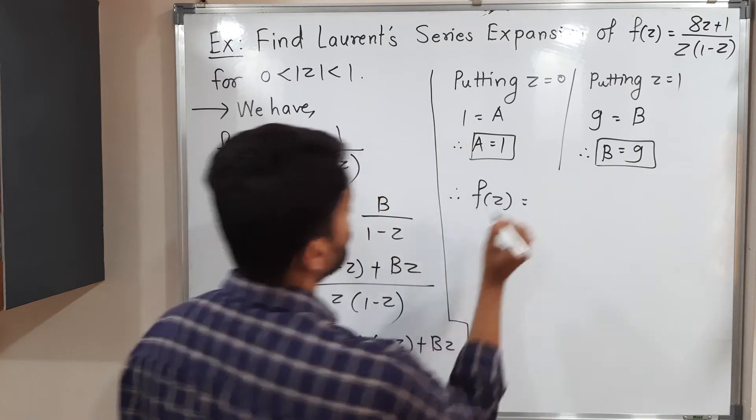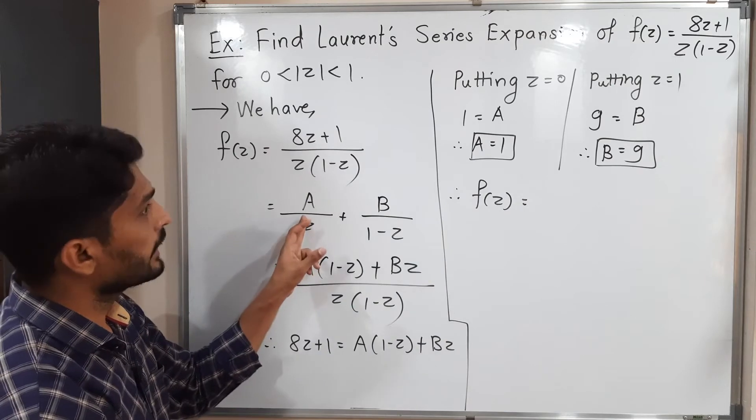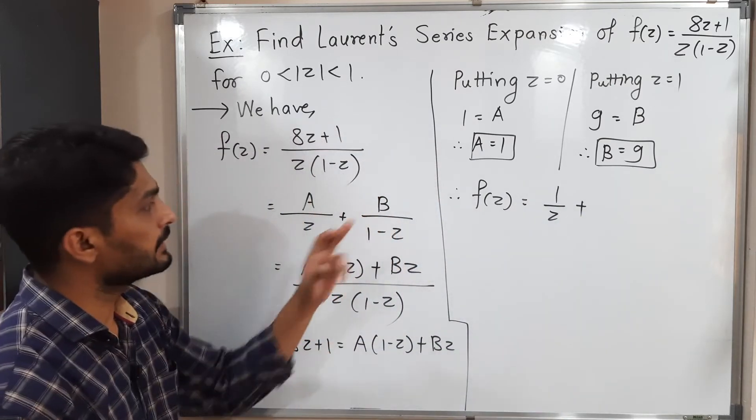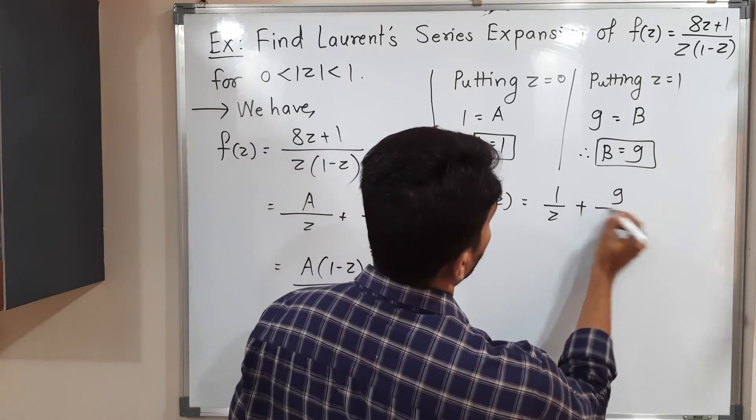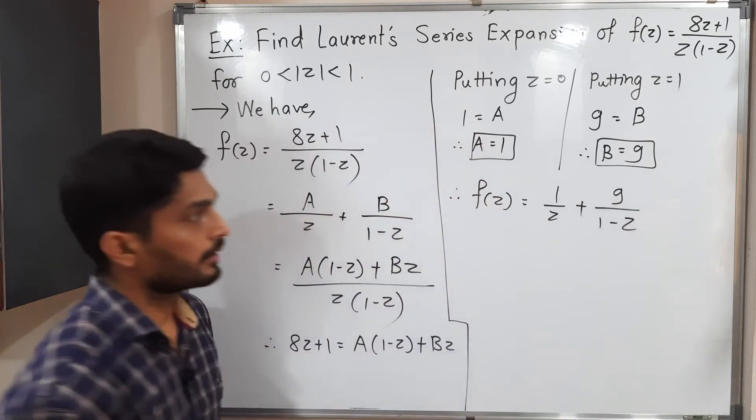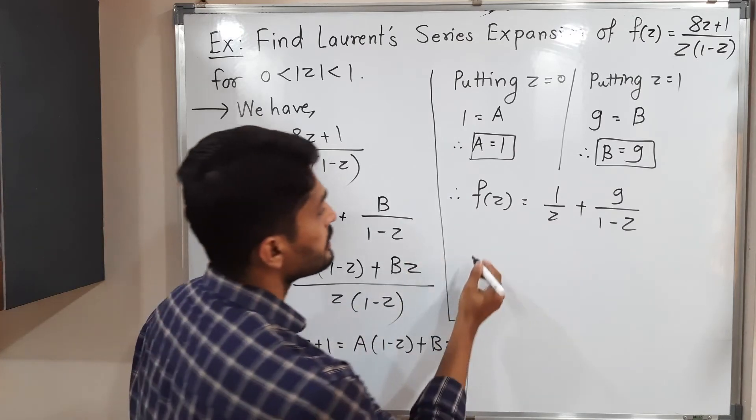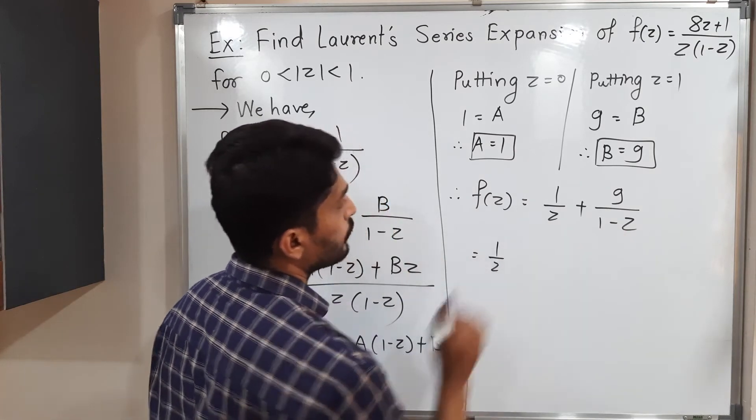Therefore our f(z) will be f(z) equals A, A means 1. 1 upon z plus B, B is 9. 9 upon 1 minus z. See, 1 by z already we have. So I will not disturb it, 1 by z. But here only we want z.